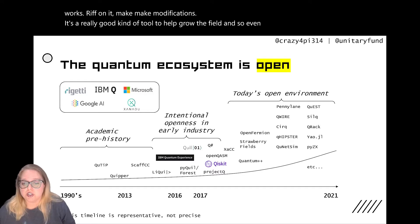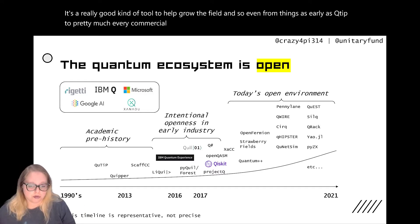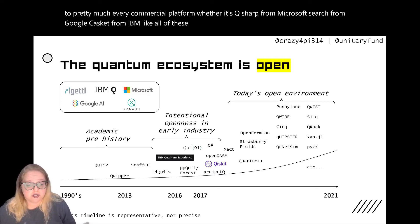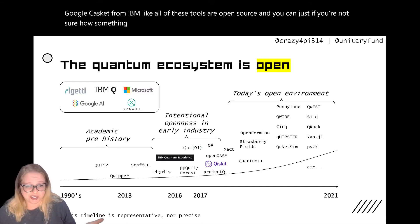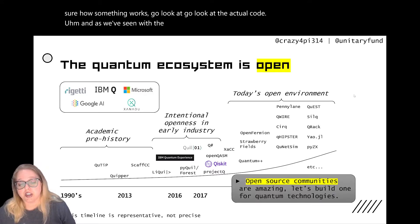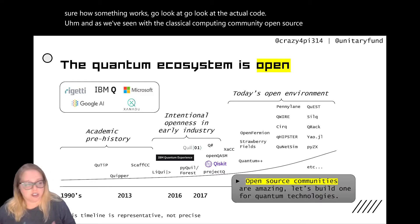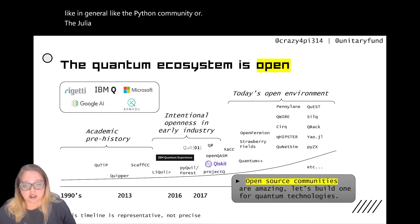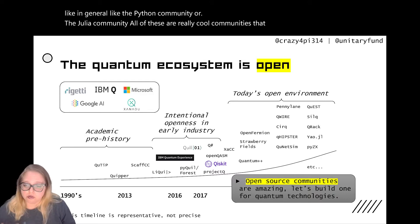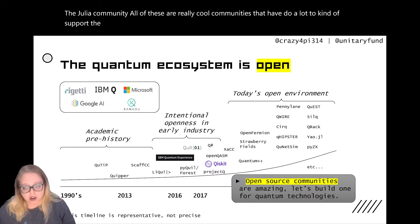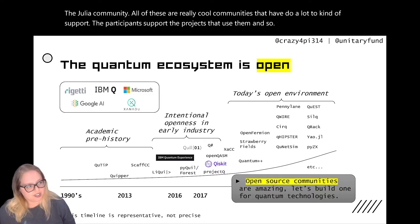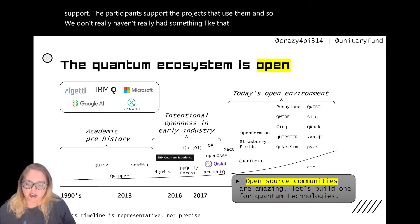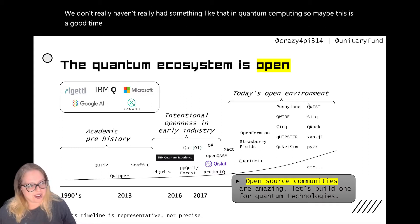Even from things as early as Q-tip to pretty much every commercial platform — whether it's Q-Sharp from Microsoft, Cirq from Google, Qiskit from IBM — all of these tools are open source. And if you're not sure how something works, you can go look at the actual code. And as we've seen with the classical computing community, open source communities like the Python community or the Julia community do a lot to support participants and projects. We haven't really had something like that in quantum computing, so maybe this is a good time to start.